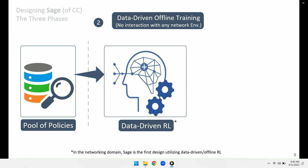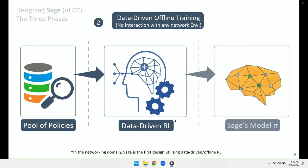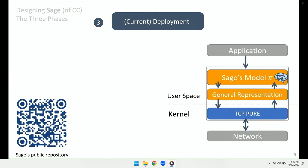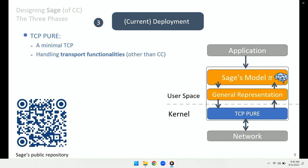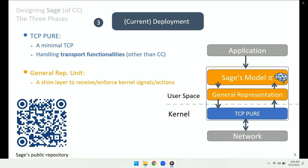After the training, which is fully offline, we get the SAGE model — basically the basis of a deep neural network. Then we put SAGE into a new architecture with two extra components. One is TCP-PUR, a minimal TCP implemented on the kernel side that handles general transport functionalities other than congestion control — when it comes to congestion control, TCP-PUR is a dummy that just executes given instructions. The other component is the General Representation Unit, a shield layer to receive and enforce current signals and actions.